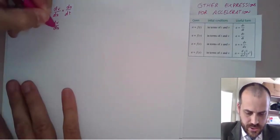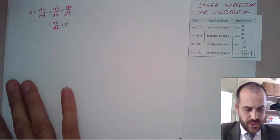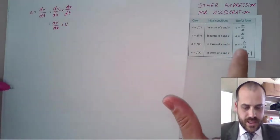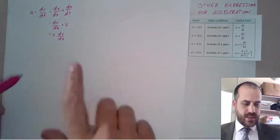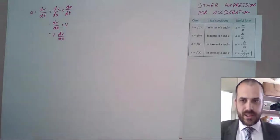we get DV, DX times velocity, which is the same as that guy there, just written in a different order. So, that's that one there.